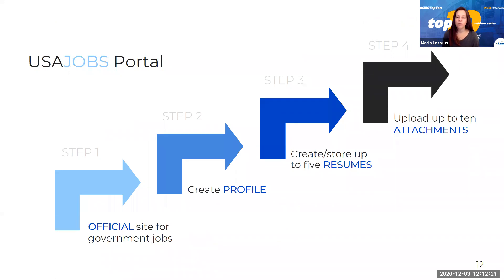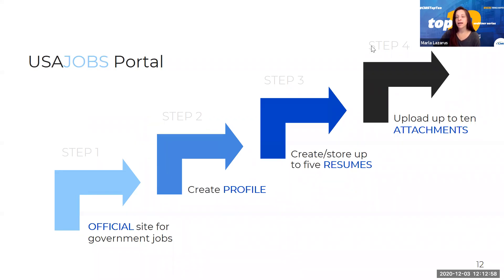Step one: visit the USAJOBS website. Step two: create an account for yourself and set up your profile. It will go through a list of questions and prompt you for everything to fill out. Next, you can create or store up to five resumes in your USAJOBS profile. Start with your most general resume and then tailor or target additional ones as you apply to positions. You can also upload up to 10 attachments — everything from a cover letter to transcripts to supporting documentation, such as a DD-214 or Schedule A letter for special hiring authorities.